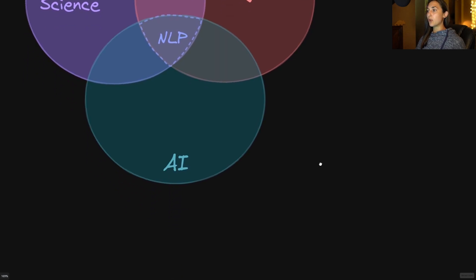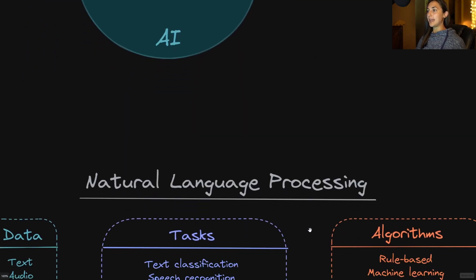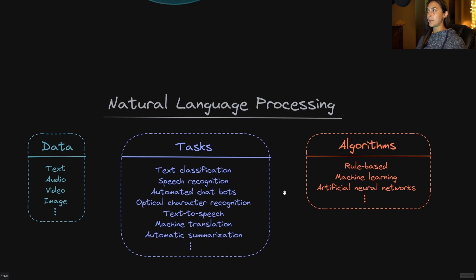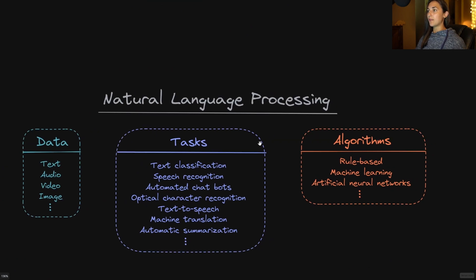There are multiple NLP tasks that are active and in use today. We have some of the common tasks outlined here, including text classification, speech recognition, automated chatbots, optical character recognition, text-to-speech, machine translation, automatic summarization, and many more.